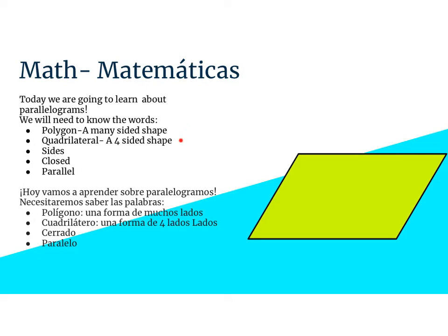We also need to know the word quadrilateral. A quadrilateral is a type of polygon that only has four sides. Sides are the edges of a shape. Closed means that all the sides of the shape connect with no openings. And parallel — that's when two lines run next to one another but they never, ever cross. With the shape we have here, these two lines could go on forever and they're never going to cross one another. They are parallel.